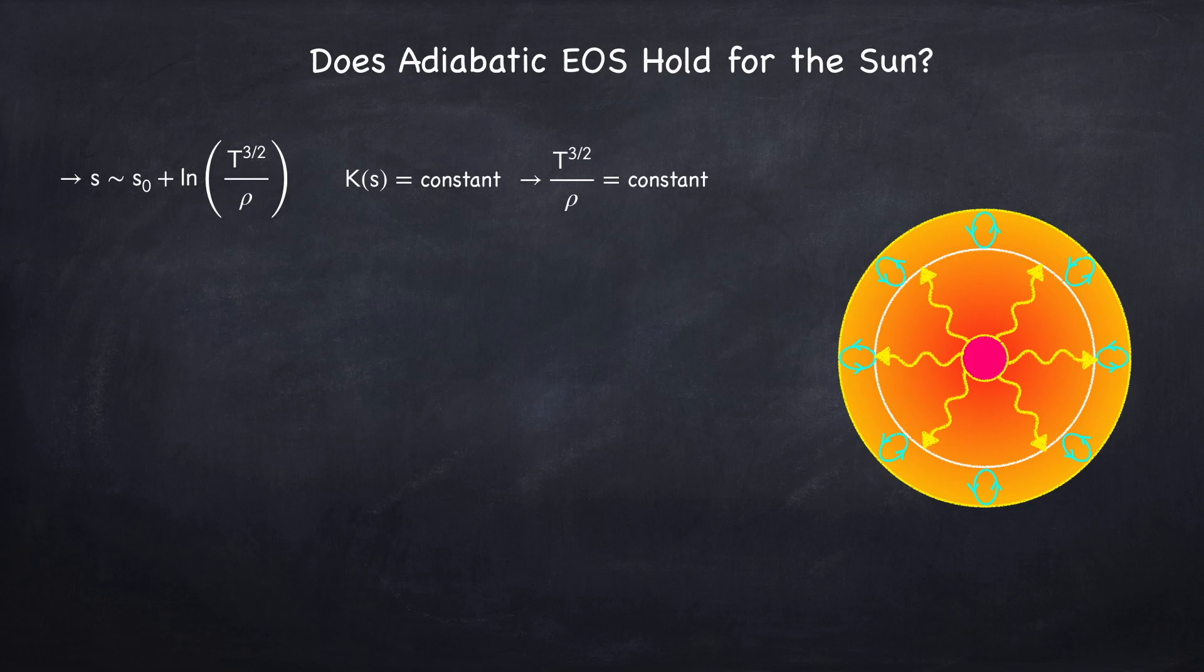So this can be a bit confusing here because radiation dominated stars are generally fully convective, and gas dominated stars often have large radiation zones. Now, remember what we're asking is, can we assume that entropy is constant throughout the star? Well, the entropy is only constant in the convective zones.